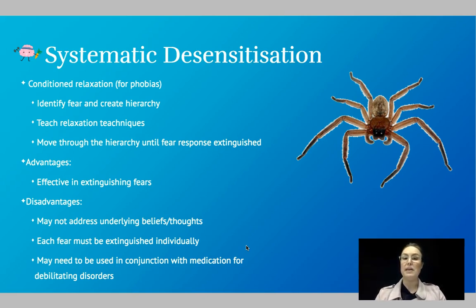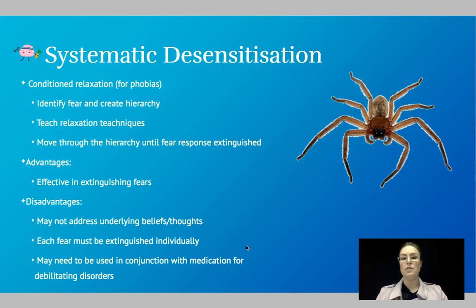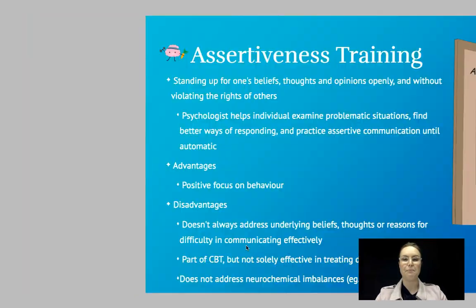Disadvantages of systematic desensitization are that it may not address underlying beliefs or thoughts, and each fear has to be extinguished individually. For someone with social phobia, it isn't just one situation they're afraid of — it's a whole range. It may also need to be used in conjunction with medication, particularly for debilitating disorders, so it's not always a suitable approach for everybody.